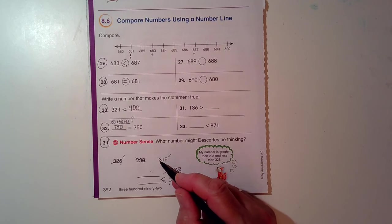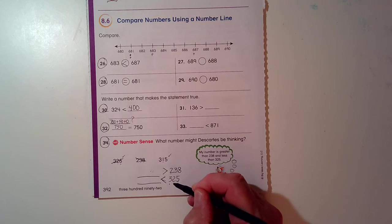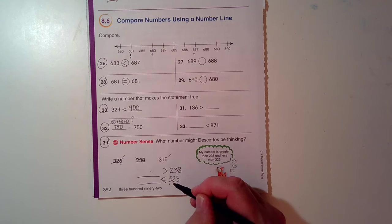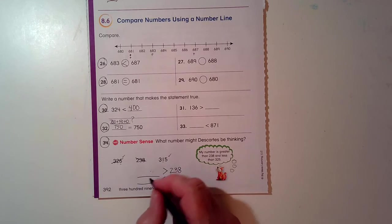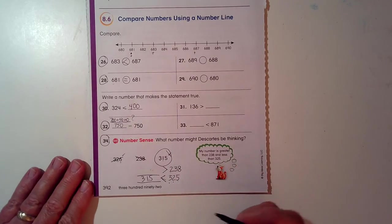Let's look at this. 315. Three hundreds, three hundreds. One set of ten, two sets of ten, so one is less than two. The number he's thinking of is 315.